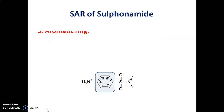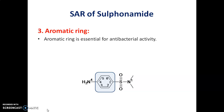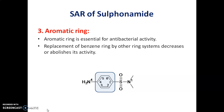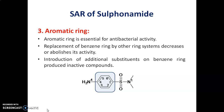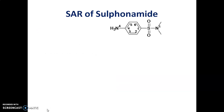The third point in the SAR of Sulphonamide is about the aromatic ring. The aromatic ring is essential for antibacterial activity. Replacement of this benzene ring by other ring systems decreases or abolishes its activity. If we introduce additional substituents on the benzene ring, it produces inactive compounds.